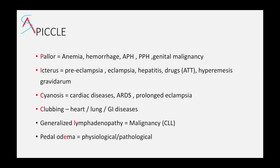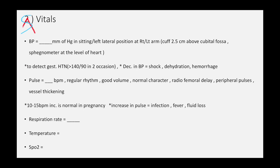Then look for pedal edema — it could be physiological or pathological. For vitals, always say something like 120 by 80 mmHg in sitting or left lateral position. When the patient is in sitting or left lateral position, it relieves compression by the uterus. BP could be high. If the BP is more than 140 by 90 on two occasions, then we can label the patient as gestational hypertension.